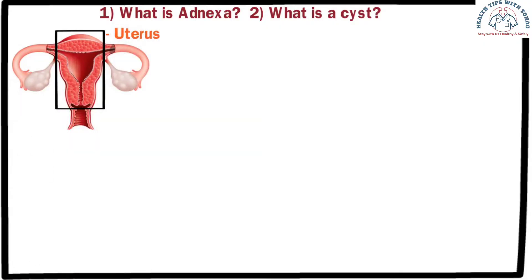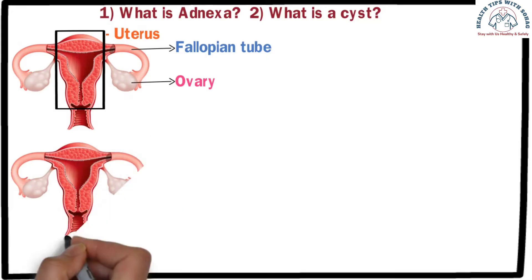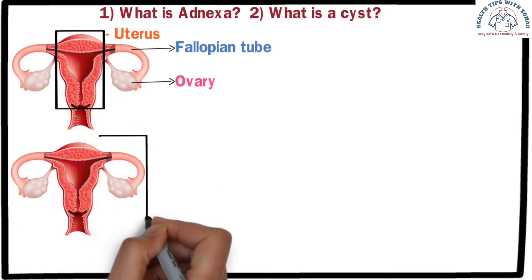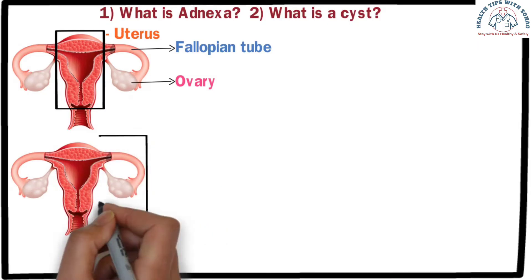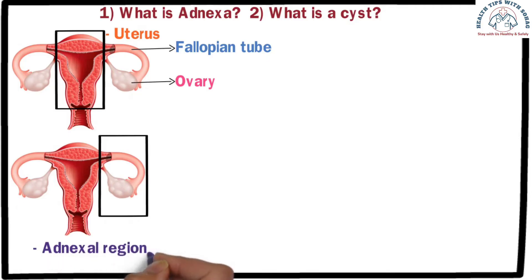This part is called the uterus. On both sides of the uterus, there is one ovary and one fallopian tube each, along with some ligaments. In the female reproductive system, the structures on both sides of the uterus — including the ovary, fallopian tube, and ligaments — are collectively referred to as the adnexa or adnexal region.